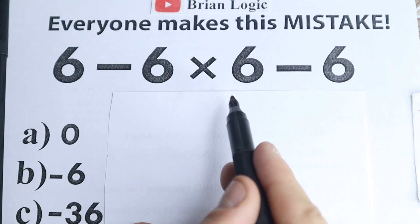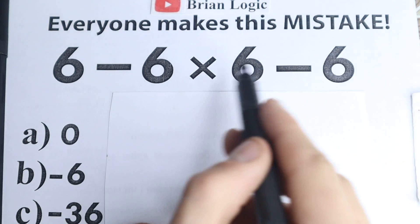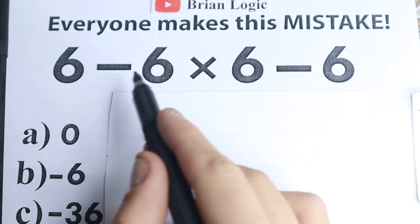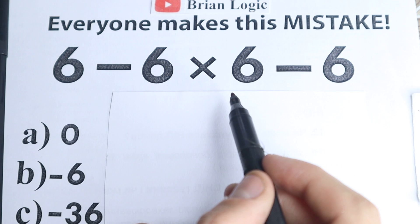So 6 minus 6 times 6 minus 6, very easy, maybe the easiest challenge you've ever seen. Nothing hard, no squares, cubes, sine, cosine right here. All we have is subtraction and multiplication, so nothing hard on the first side.